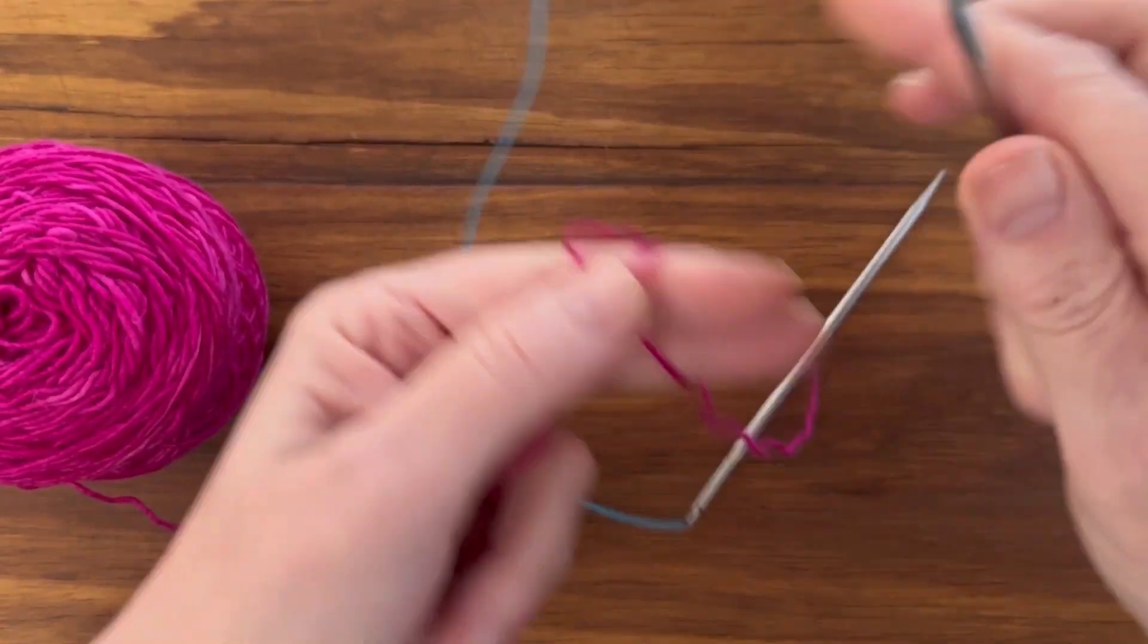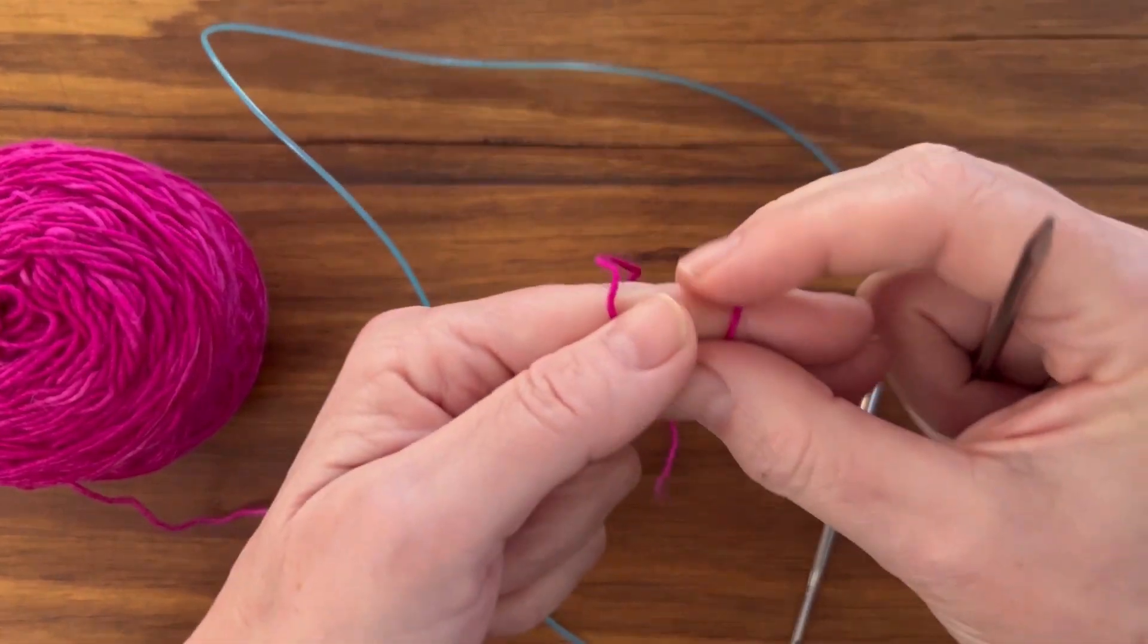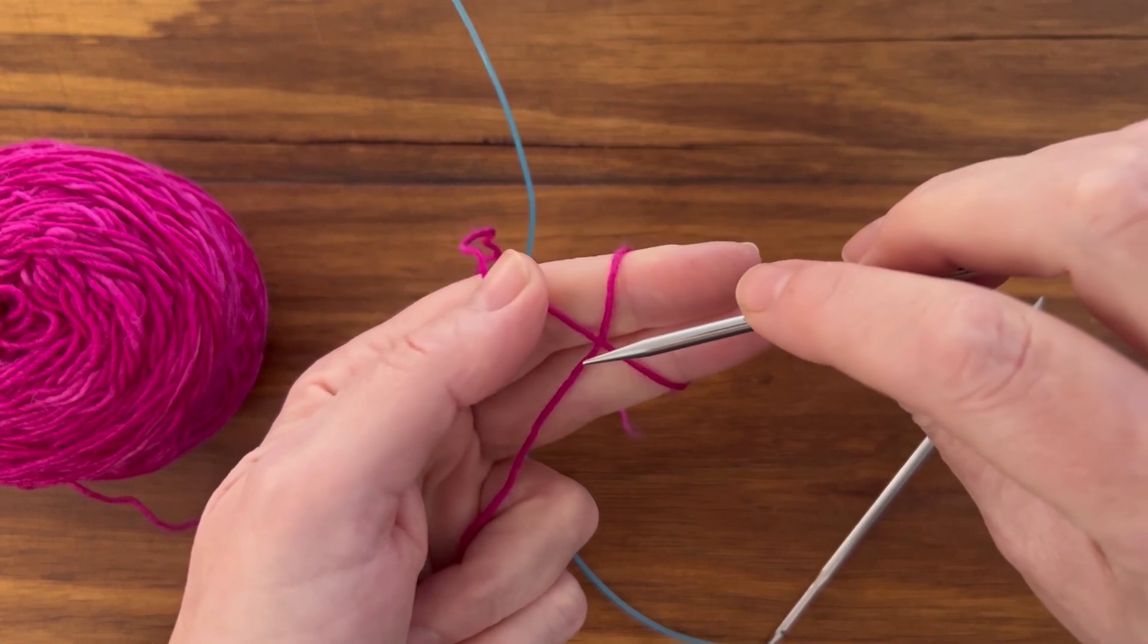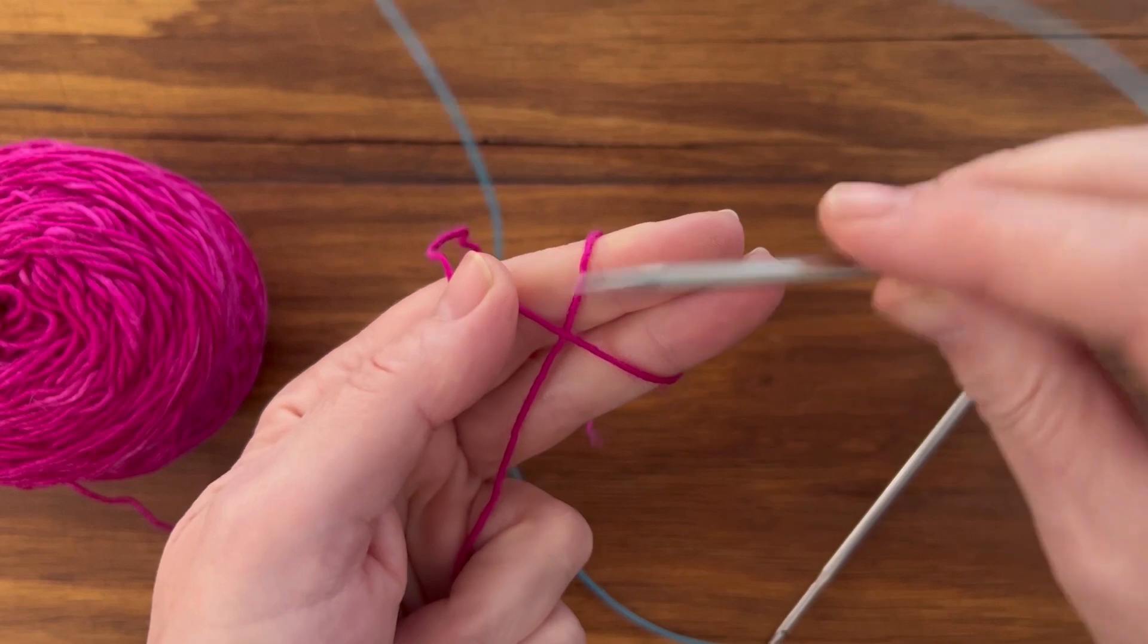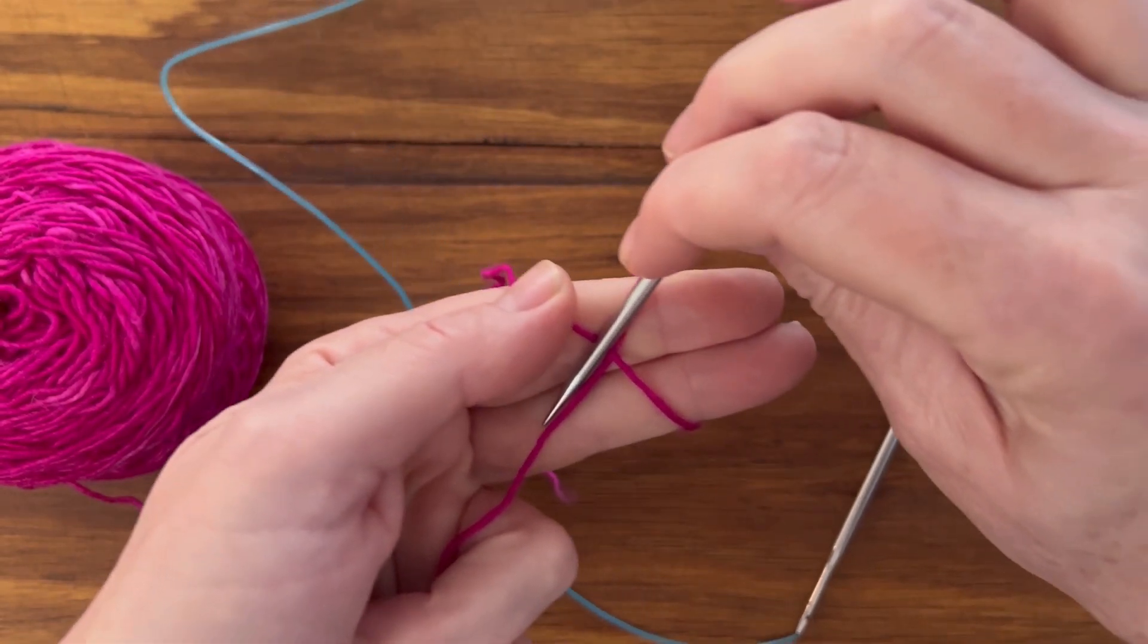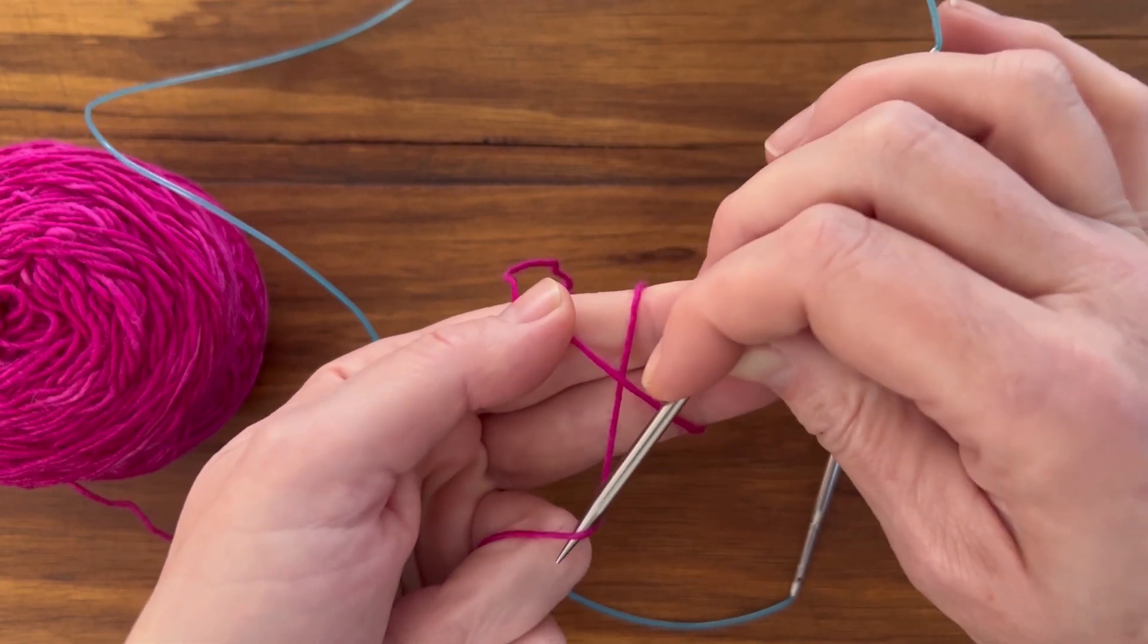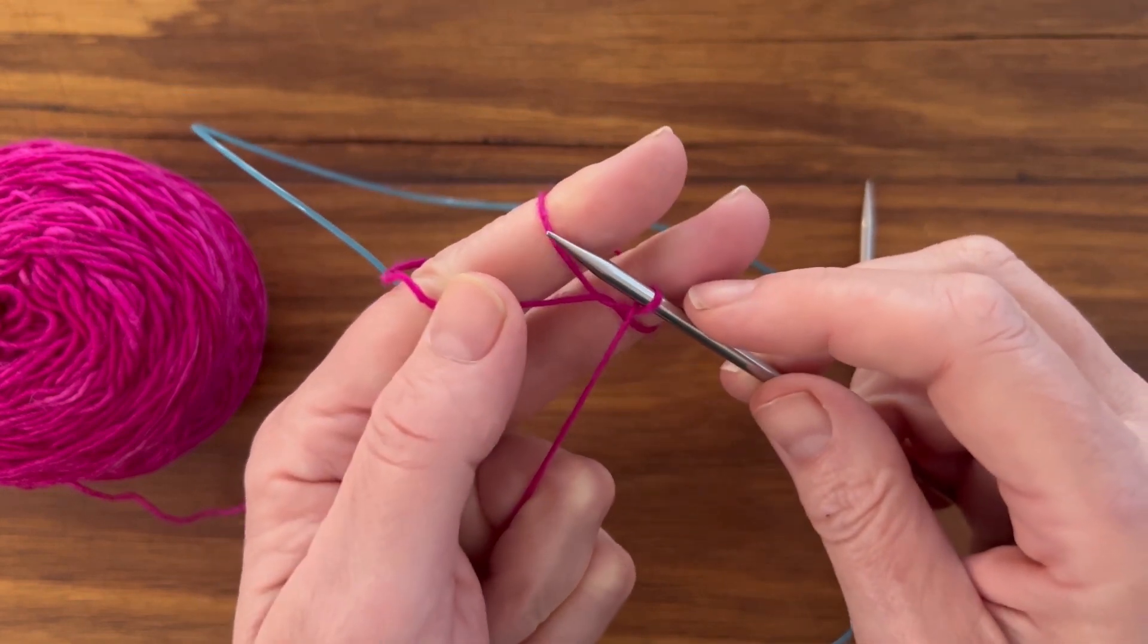It can be a little bit fiddly and tricky at first, but once you get the hang of this it's quite a fast and easy way to cast on. The pinhole cast on. So start with the needle. Bring it under, behind and under that working yarn.